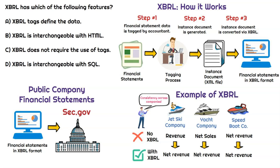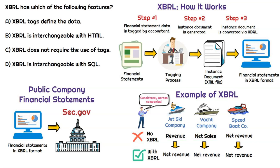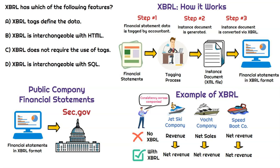Let me give you a quick example. Let's say we have three different companies: Jet Ski Company, Yacht Company, and Speedboat Company. With no XBRL in their financial statements, they may label their top line as 'revenue,' 'net sales,' or 'net revenue' — those all mean pretty much the same thing, but the terminology is different. With XBRL, if they all select the same taxonomy, they would all tag each of their respective classifications to 'net revenue.' Now all three companies have it described consistently, and if we wanted to pool net revenue for all three companies, it would be very easy. That's why XBRL is beneficial to everybody involved with financial statements.